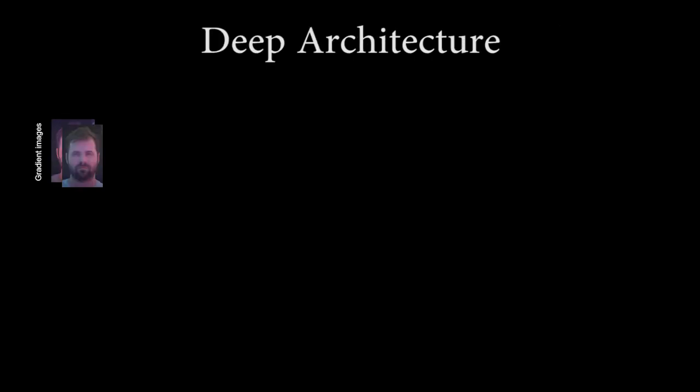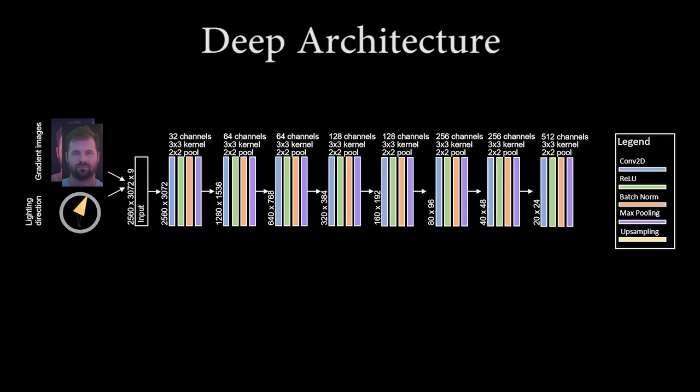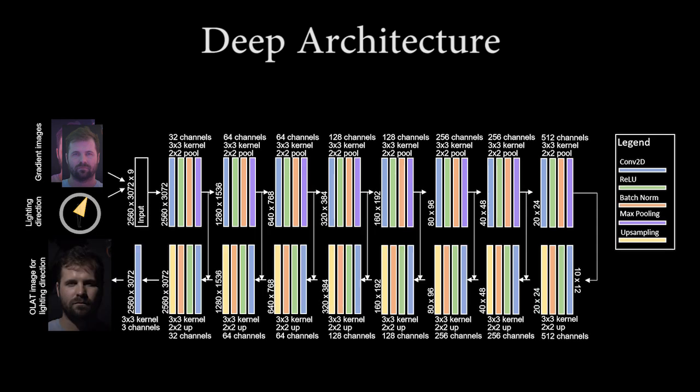We leverage a UNet-like architecture that takes as input the two gradient images and a lighting direction. The lighting direction is concatenated to each pixel value. Multiple encoding and decoding stages with skip connections are employed to regress the final output image. For additional details, the viewer is encouraged to refer to the paper.